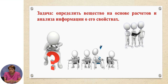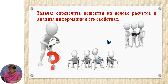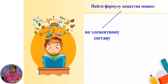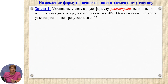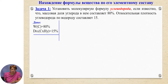Now we face the task of determining a substance based on calculations and information about its properties. How can we find the formula of a substance from its elemental composition? Let us consider the following problem: establish the molecular formula of a hydrocarbon if the mass fraction of carbon is 80% and the relative density of the hydrocarbon with respect to hydrogen equals 15.